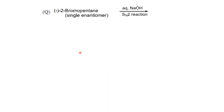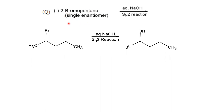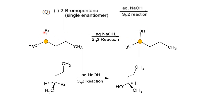In the second case, we have 2-bromopentane. Here, the bromine is attached directly to the chiral carbon, and the reaction mechanism is SN2. Since the substitution happens at the chiral carbon via backside attack, it results in inversion of configuration — Walden's inversion. Assigning R/S configuration to the starting material and the product confirms they are opposite to each other. So this product has an inverted configuration.